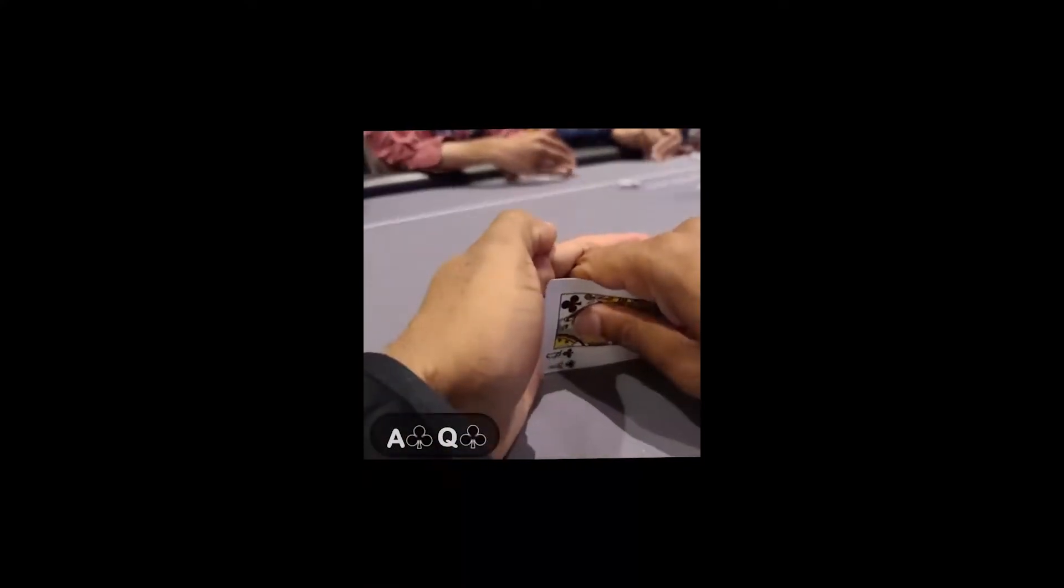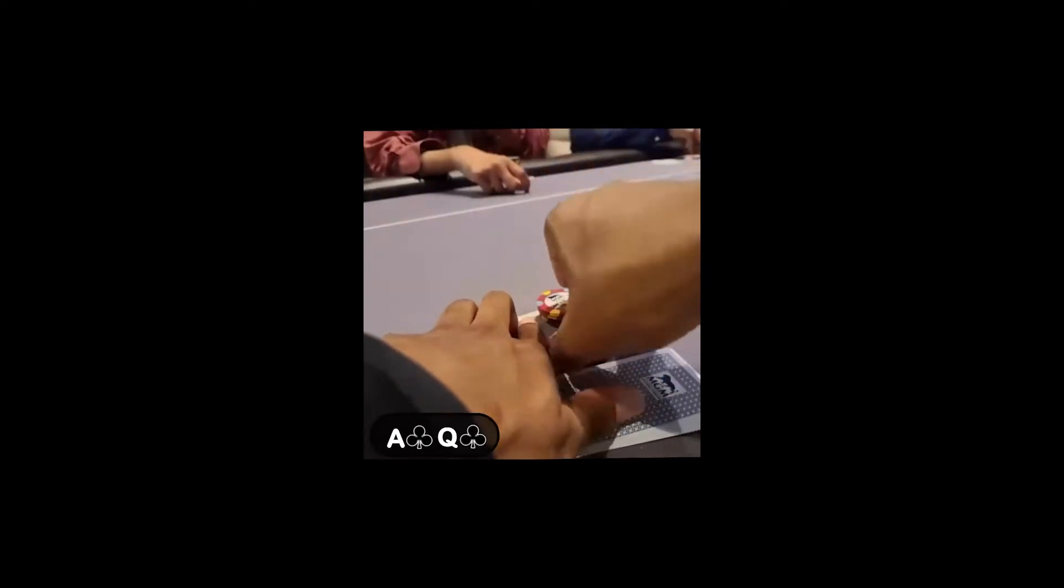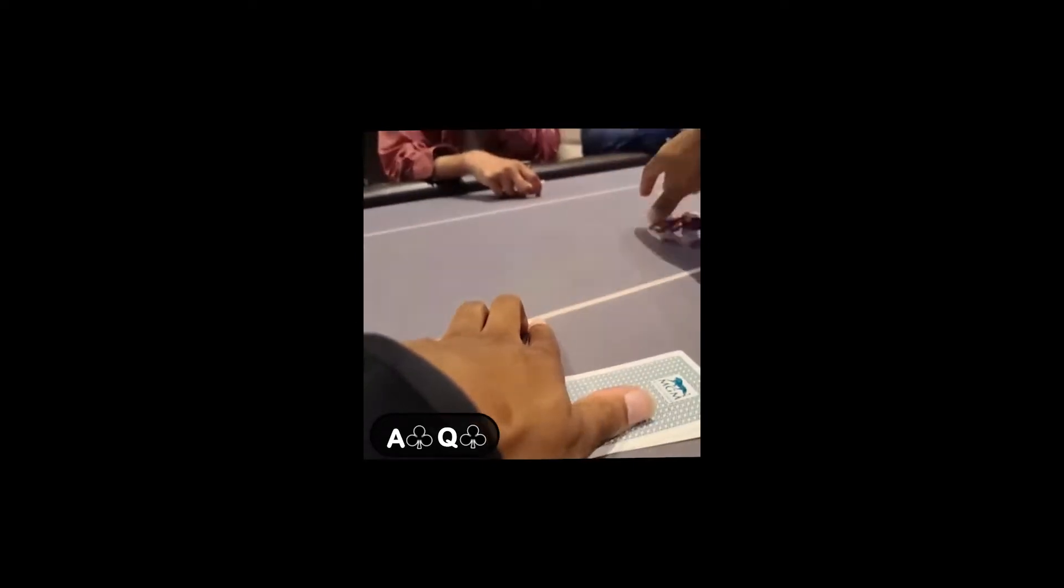So in the first hand, we're just going to start off with a banger. I have ace queen of clubs in the cutoff, and when it limps around to me, I decided to raise it up to $15. It then folds around to the big blind who then snap raises to $50. The middle position player who limped also decides to call the three bet for $50, so I'm putting him on middle pocket pairs. He's trying to hit a set or something like that, but I don't really have a great feeling about this. Obviously, I'm going to need a lot of help here.